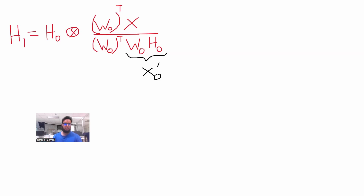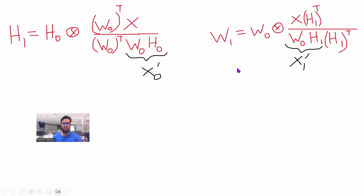The opposite is also true: if the values of X0' are smaller than X, this matrix will have values larger than 1 — like 2, 3, 4, or 1.5 — and the values of H will increase. So this formula not only tells you the direction of adaptation for H, it also tells you the magnitude of how much to change it. We have a similar formula for W as well. Note that this update uses H1, not H0 — we always use the latest H and W available.